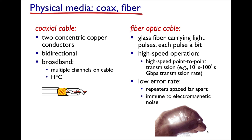Coaxial cable, used in hybrid fiber coax, is higher bandwidth than twisted pair because of the relationship between the core conductor in the middle and the copper sheathing. It's bidirectional and also guided media. Fiber optic cable is the highest bandwidth — you can get hundreds of gigabit transmission rate just by changing the way you pulse the laser. There's less interference and it's not susceptible to electromagnetic interference: if you turn on a hairdryer near a fiber optic cable it won't generate interference, unlike twisted pair Cat5 or Cat6 cable.